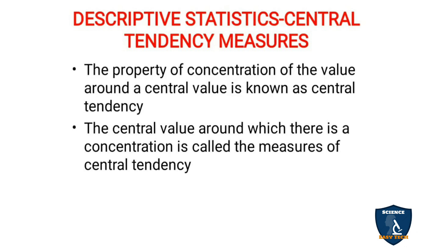So under descriptive statistics, you have central tendency measures. The property of concentration of values around a central value is known as central tendency. When you take either arithmetic mean, median, or mode, most of the values are concentrated around the central value — that is known as central tendency. The central value around which there is a concentration is called the measure of central tendency.